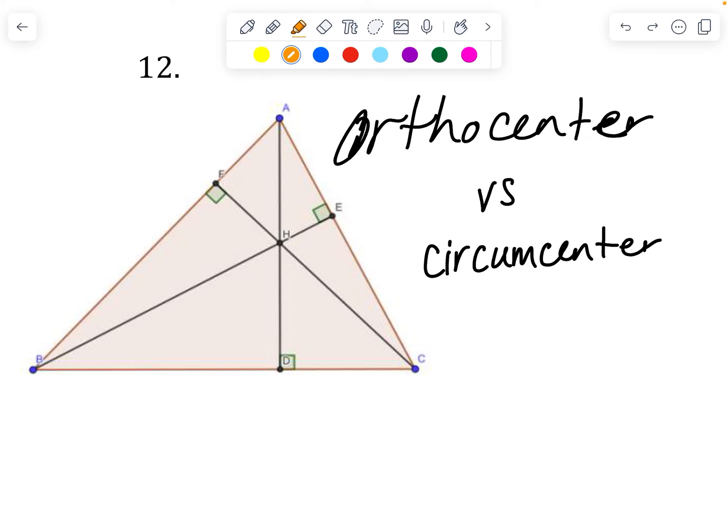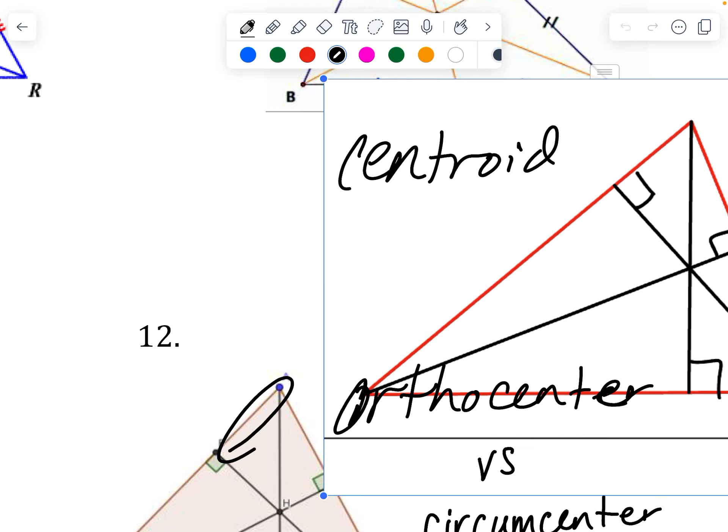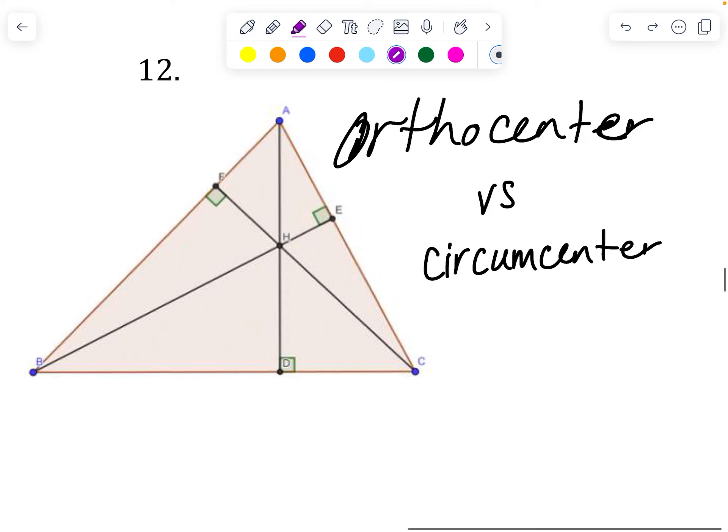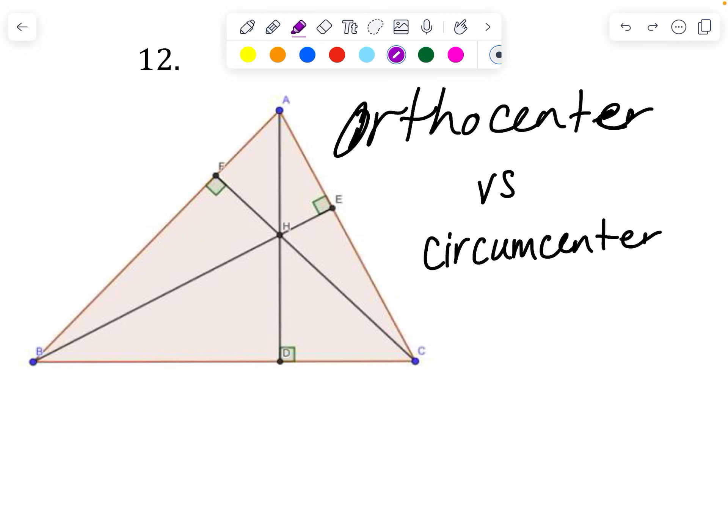And see if it is marked with any numbers that are equal. Like if this is 7 and this is 7. But because we're not given any numbers, and because it was not clearly marked like this, it's not going to be a circumcenter. This would have to be an orthocenter. So checking to see if these parts are cut in half can tell you if it is a circumcenter or not.